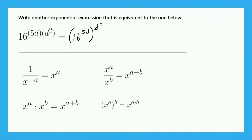Interestingly, you could change the position of d squared and 5d so that 5d is here and d squared is here, and the value of the expression would not change, because fundamentally what we're doing is multiplying 5d and d squared regardless of whether 5d is here or here and d squared is here or here.